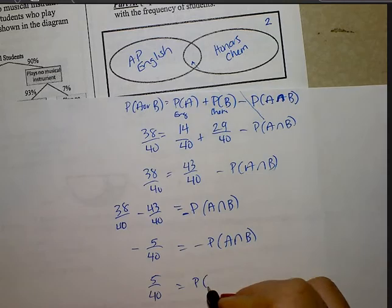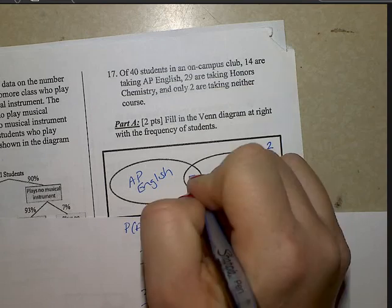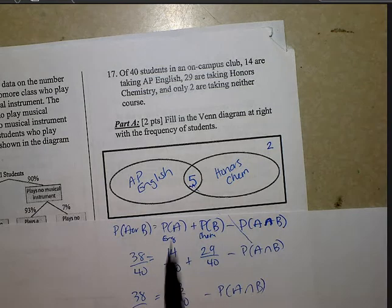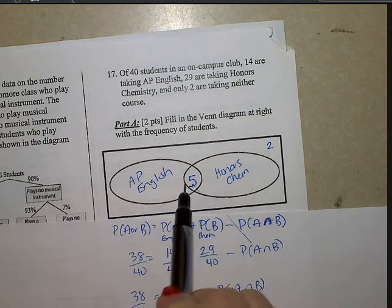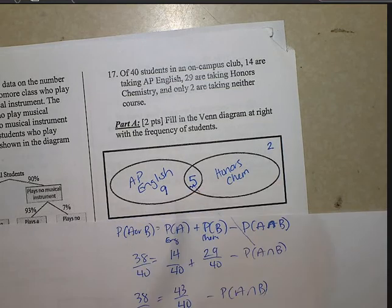That means the intersection between A and B, or the overlapping portion, would be 5 of the total of 40 students are both in AP English and Honors Chemistry. So put a 5 up here. We know that there's a total of 14 students in English. 5 are in this portion, and we need a total of 14 here. That leaves me with 9 in this portion.